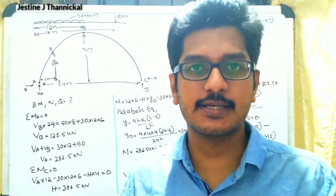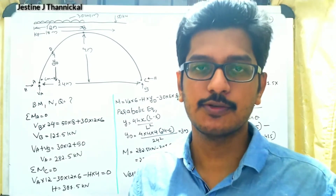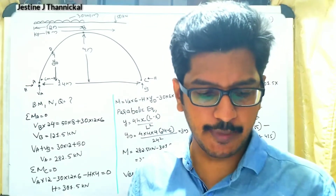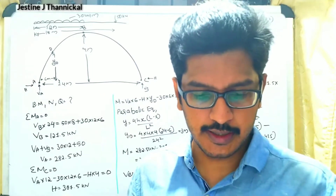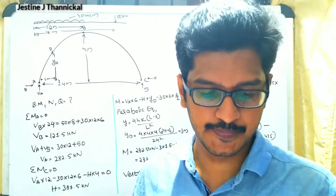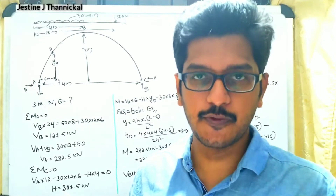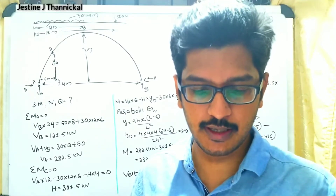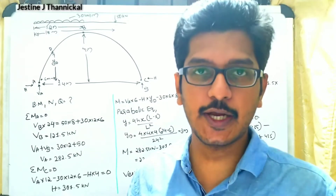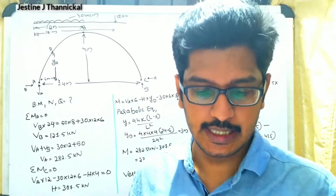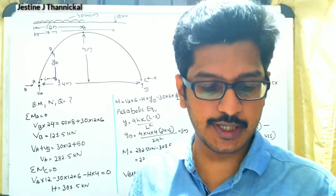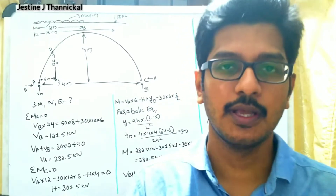Welcome to a new video lecture. Today we will discuss a problem related to the parabolic arch. A three-hinged parabolic arch, hinged at the supports and under the crown, has a span of 24 meters and a central rise of 4 meters. It carries a concentrated load of 50 kilo Newton at 18 meters from the left support, and a uniformly distributed load of 30 kilo Newton per meter over the left half portion. Determine the bending moment, thrust, and radial shear at a section 6 meters from the left support.